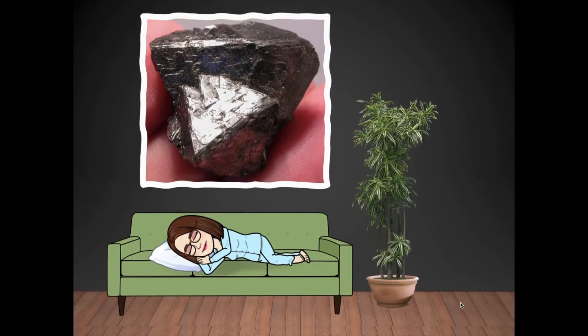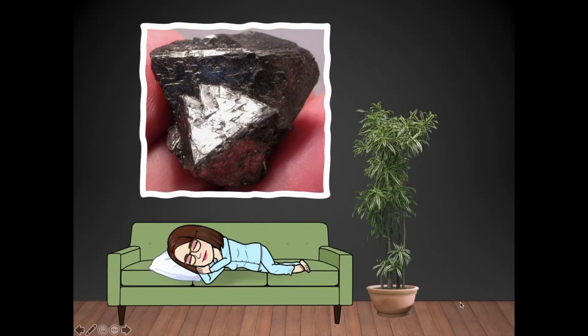This particular rock in the picture is actually a natural magnet. It has the rock mineral magnetite, which is found in igneous rock, and it's a natural magnet that you can find here on planet Earth.